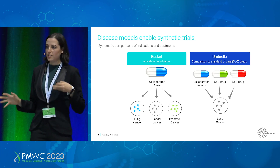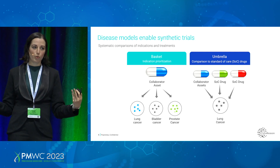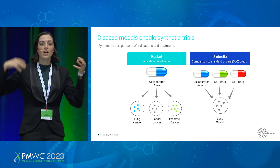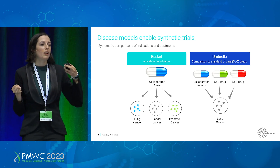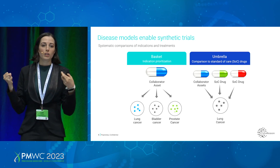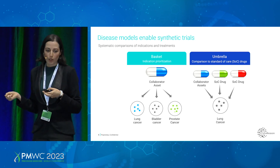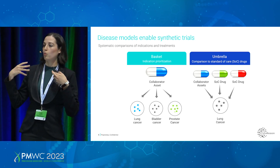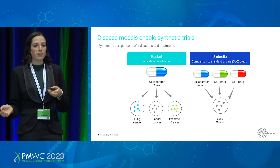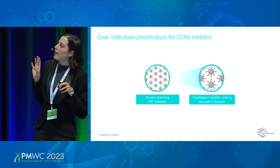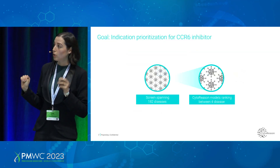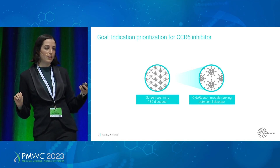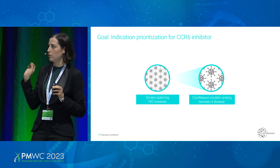Imagine stepping into a library of modeled diseases where you have dozens of models that already exist, and you can just take off the shelf the relevant models you're interested in and compare them. This is what we do at CiderEason — this is the synthetic trials we're delivering. I want to give you an example. In this project, our goal was to identify, prioritize, and match the most relevant indication for CCR6 inhibitor treatment.